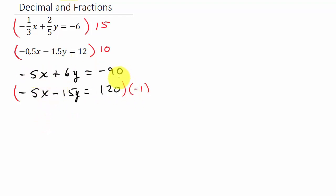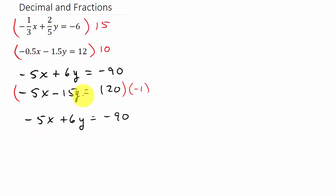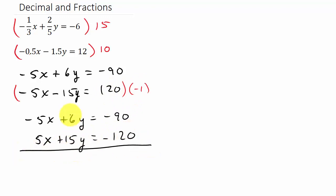Let's write the first equation down — it's not going to change: negative 5x plus 6y equals negative 90. Then multiplying the second equation by negative 1: negative 1 times negative 5 is 5x, and negative 1 times negative 15 is plus 15. Now we add, and the x terms drop out, giving us 21y. And negative 90 plus negative 120 is negative 210.